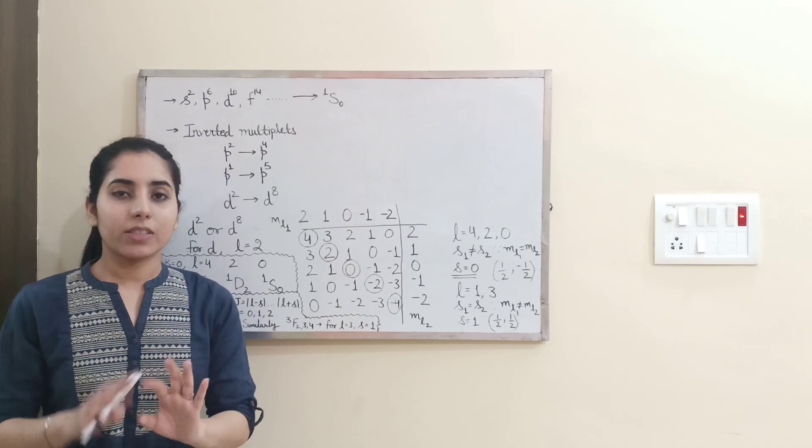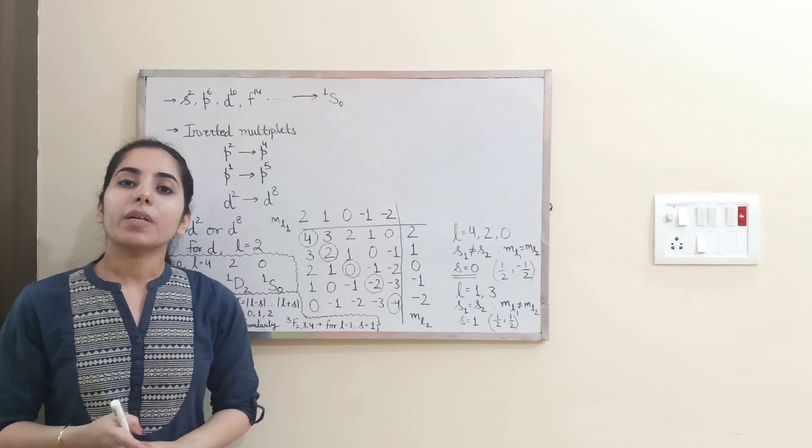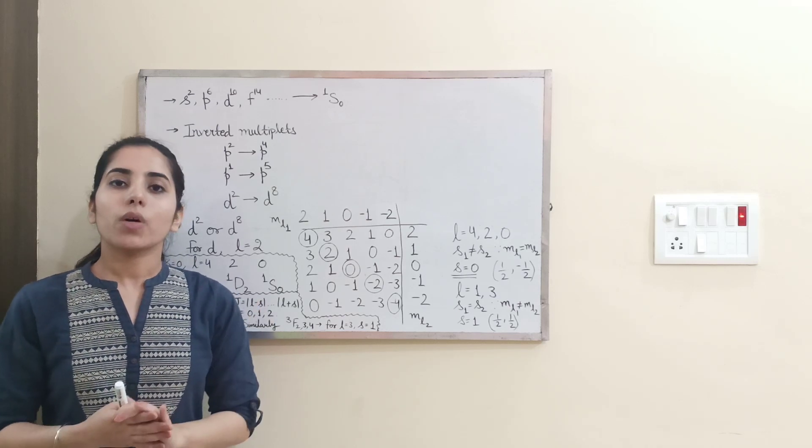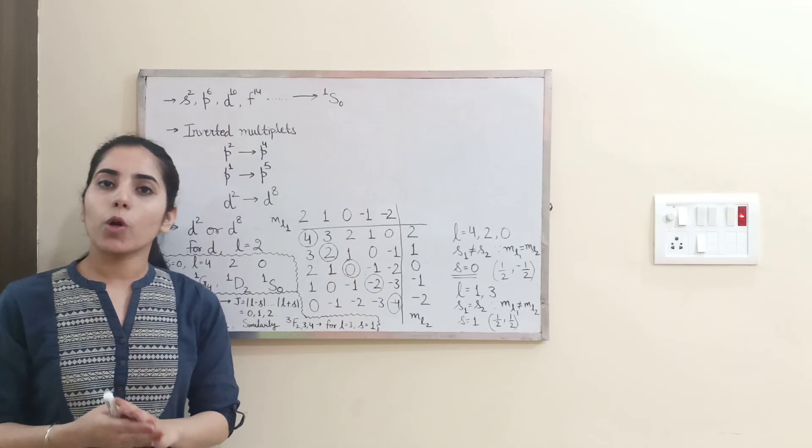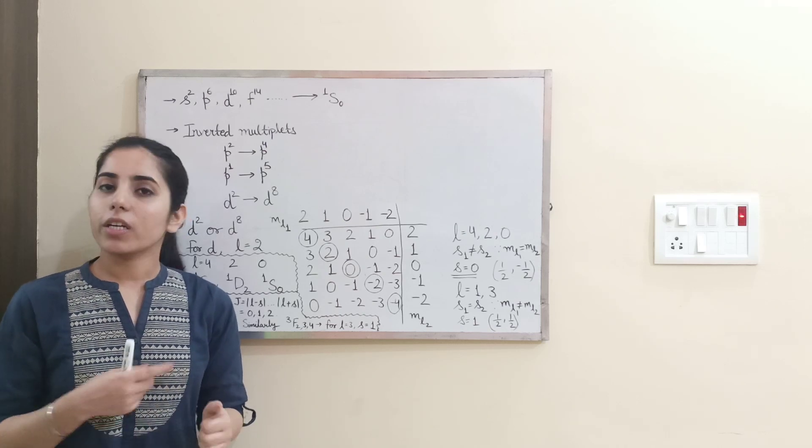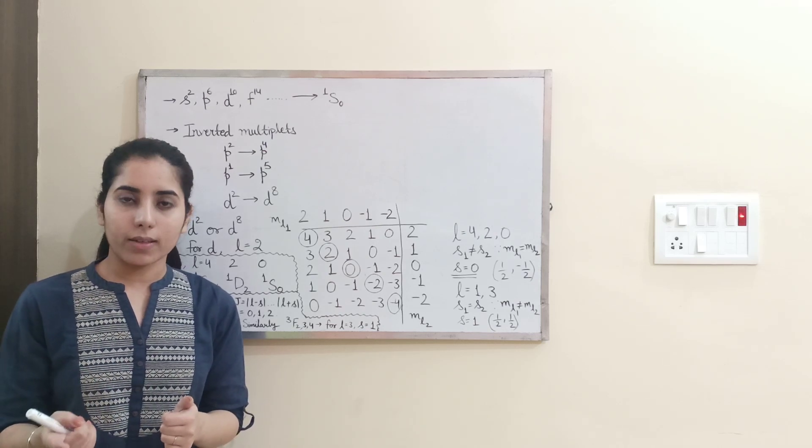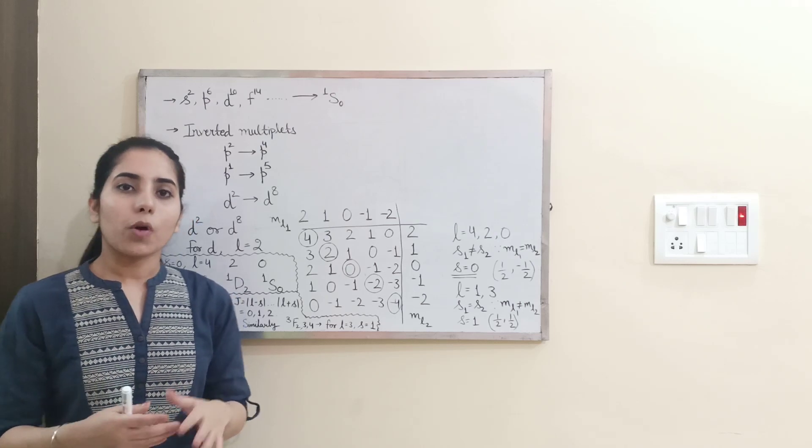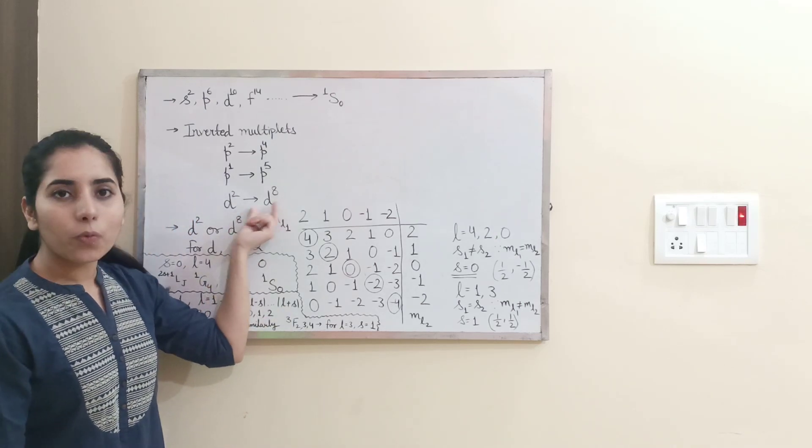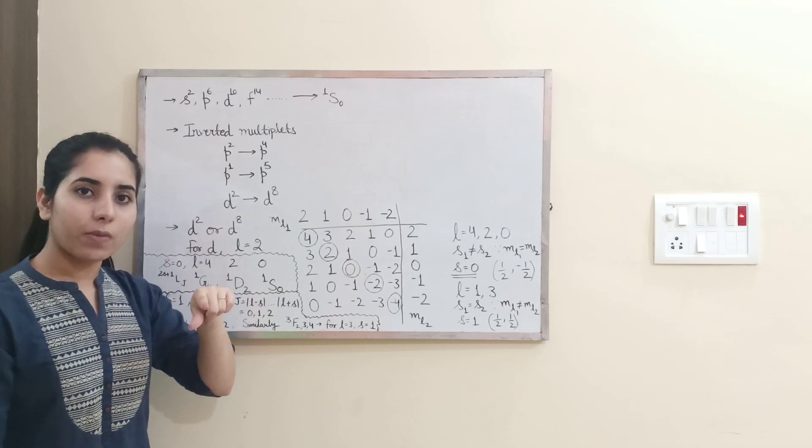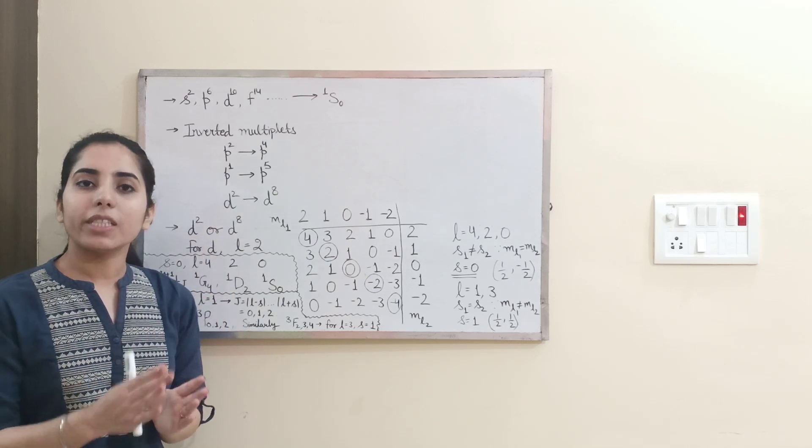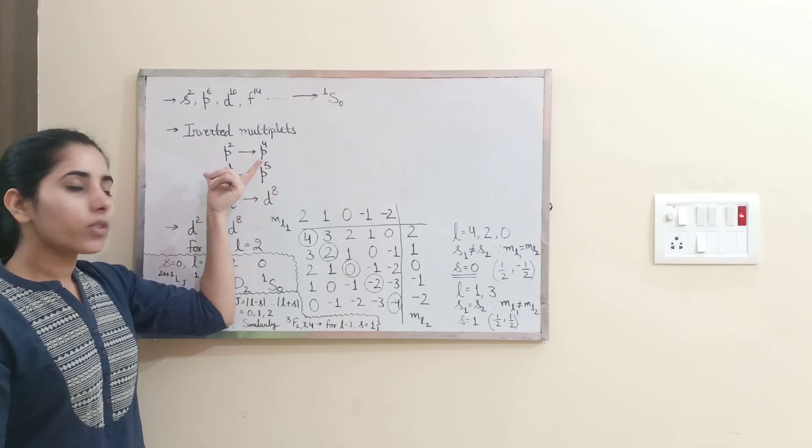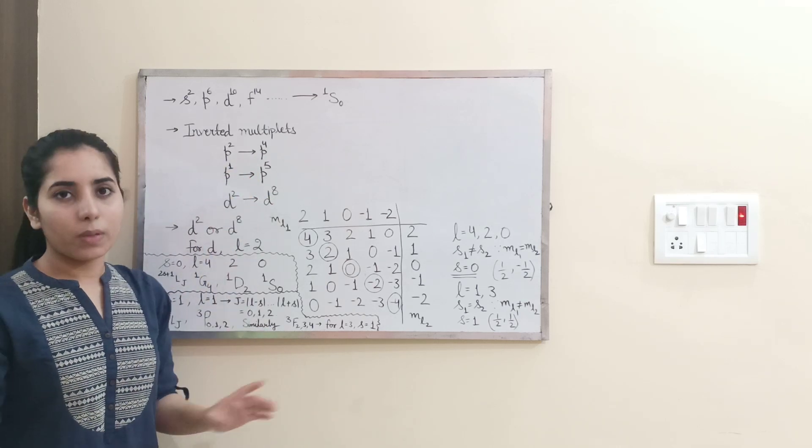But, there is one more thing. If somebody is asking you to find the ground state spectroscopic term, in that case, you have to follow the Hund's rule and according to that, you will write the ground state spectroscopic term. So there can be change. For one, it can be the other value. For other one, it can be different value. Clear? So that will be different or that can be different. Clear? Okay, but the total number of terms will be same.